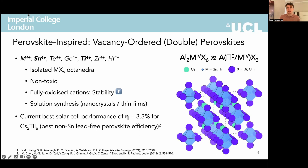These materials are synthesised in solution — one of the key selling points of perovskites — and thus far have shown a record solar cell efficiency of 3.3%. While modest, this is actually the best performing lead-free perovskite outside of the unstable tin perovskites for solar cell performance. In this work we focused on the tin and titanium members of this class as these have shown the most promise as potential solar photovoltaic absorbers.